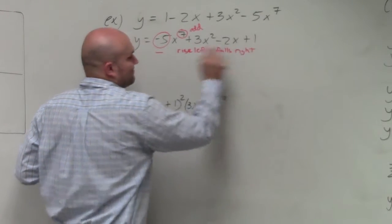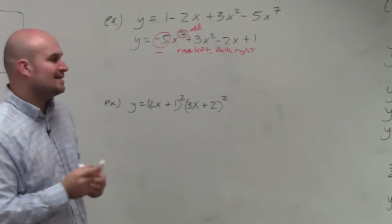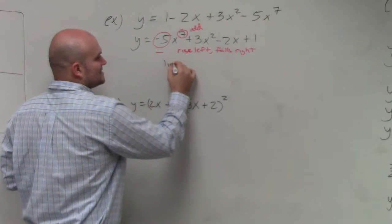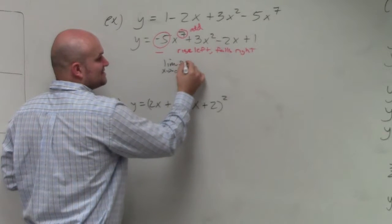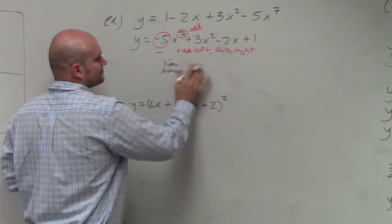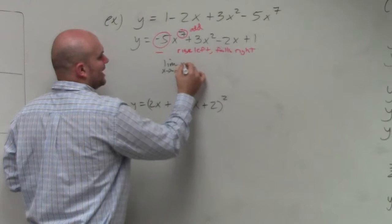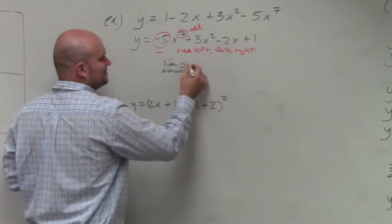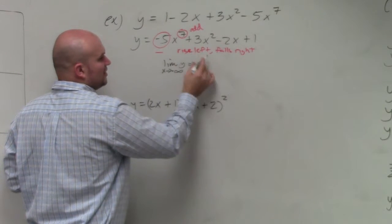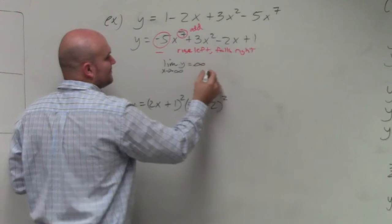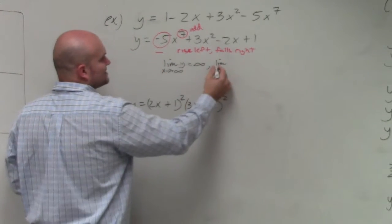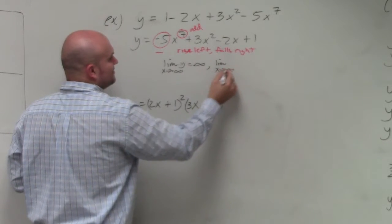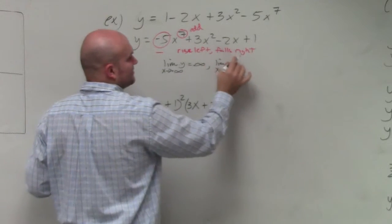Once I have that notation, then I can write it from the limit side. So as the limit as x approaches negative infinity, which goes to the left of my function y, is going to be equal to infinity. And then my limit as x approaches infinity, which is going to the right, it falls.